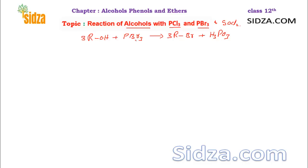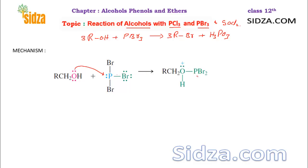Now let's look at the mechanism. When you react the alcohol with phosphorus tribromide, the alcohol molecule attacks on the phosphorus. At the same time, one of the bromine atoms is released as Br⁻, and you get an intermediate.